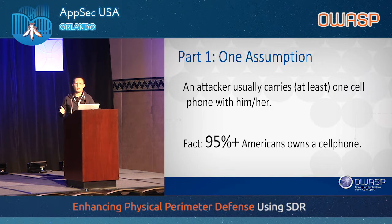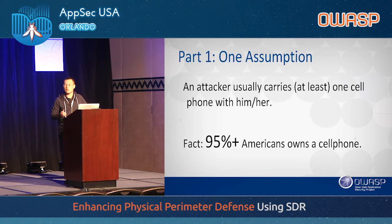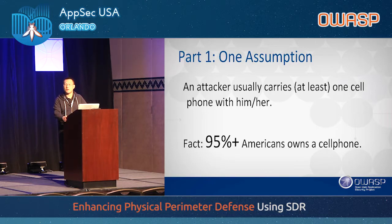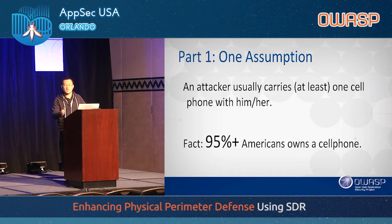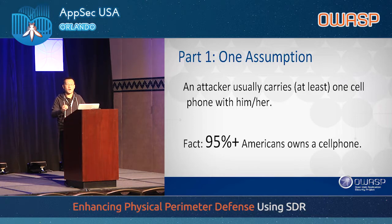Here's one assumption I'm going to make before I propose my solution: an attacker would usually carry a cell phone with them when they try to enter the trusted perimeter. I think this assumption is pretty accurate, considering that 95% of Americans own a cell phone. Also, if you're an attacker breaching the perimeter, you need some communication device in order to talk to your coworkers. So it's really safe to assume that upon breach or upon recon, there's a cell phone present.